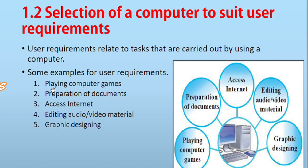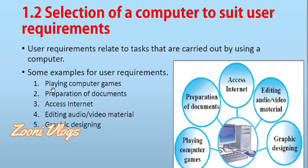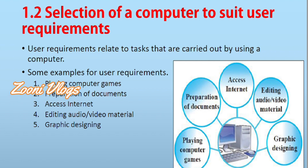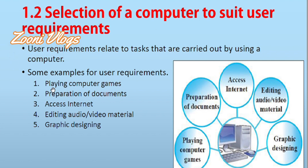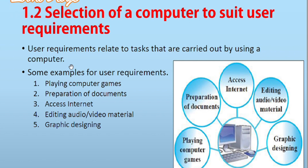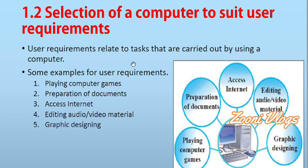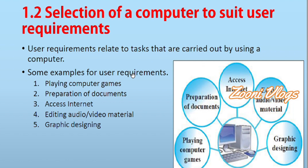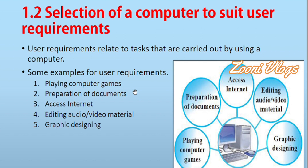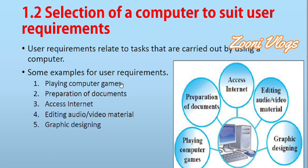The next topic is the selection of a computer to suit user requirements. We have to choose a computer that lets us do our tasks easily, and each need differs from another. User requirements relate to tasks that are carried out using a computer. In this picture you can see many tasks — these are examples of user requirements.